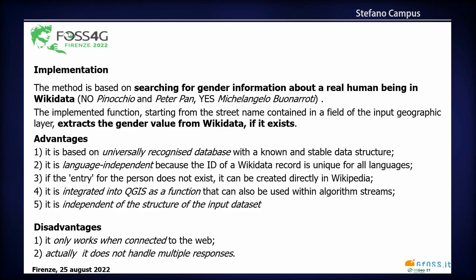The advantages of our method: it is based on the universally recognized database Wikidata. It is language independent because the ID of a Wikidata record is unique for all languages. If the person searched does not exist, we can directly create a new record in Wikidata. It is integrated into QGIS as a function, so it can be used within algorithm workflows, for example in a model builder. And importantly, it is independent of the structure of the input dataset — we can start from a dataset from OpenStreetMap or, for example, a local street directory.